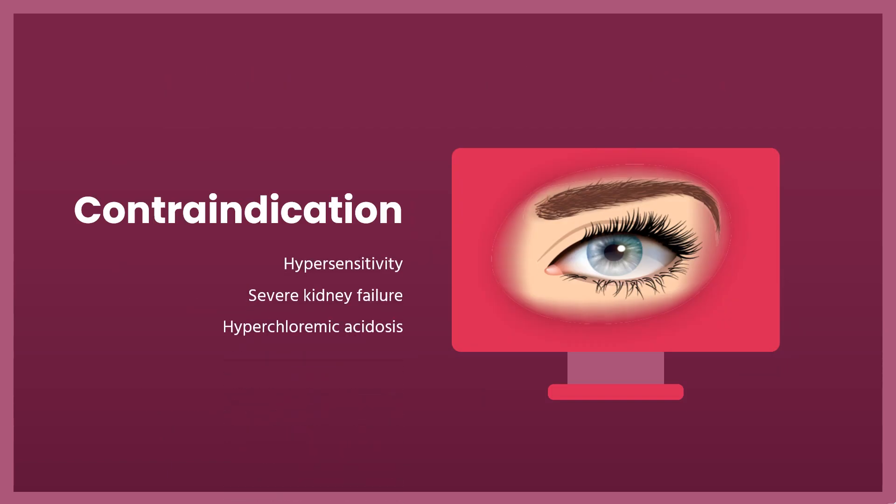Contraindications. Contraindications to using dorzolamide in humans include: hypersensitivity to the ingredients and excipients contained in the drug dorzolamide, severe kidney failure, and hyperchloremic acidosis.